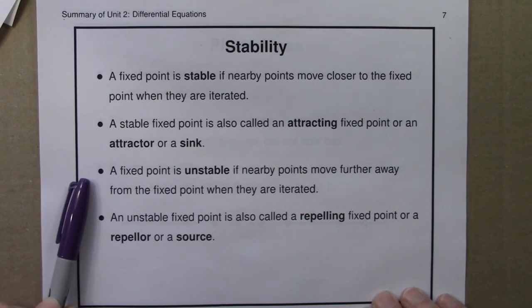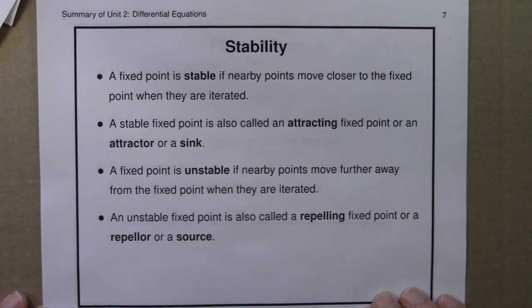A fixed point is unstable if nearby points move further away from it. And an unstable fixed point is called a repelling fixed point or a repeller. It's also called a source. You can imagine a lot of solution lines or solution curves emanating from this repelling fixed point. So source and sink, I don't think I'll use those terms much, but they're pretty standard, so you might encounter them elsewhere.